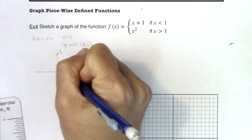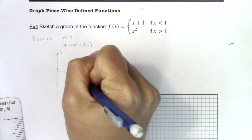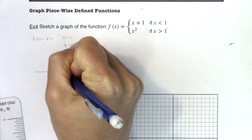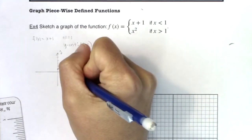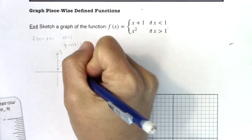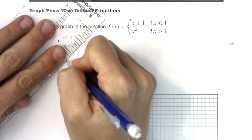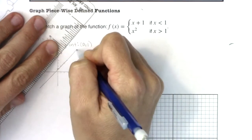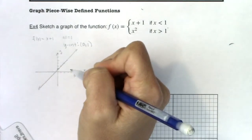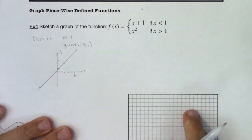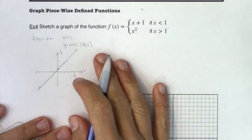I would start at 0, 1. Going up 1, over 1; up 1, over 1; up 1, over 1. So my line would look something like this. This is just a sketch — I'm drawing it by hand, no actual grid, but that's a good enough approximation of what my graph looks like.